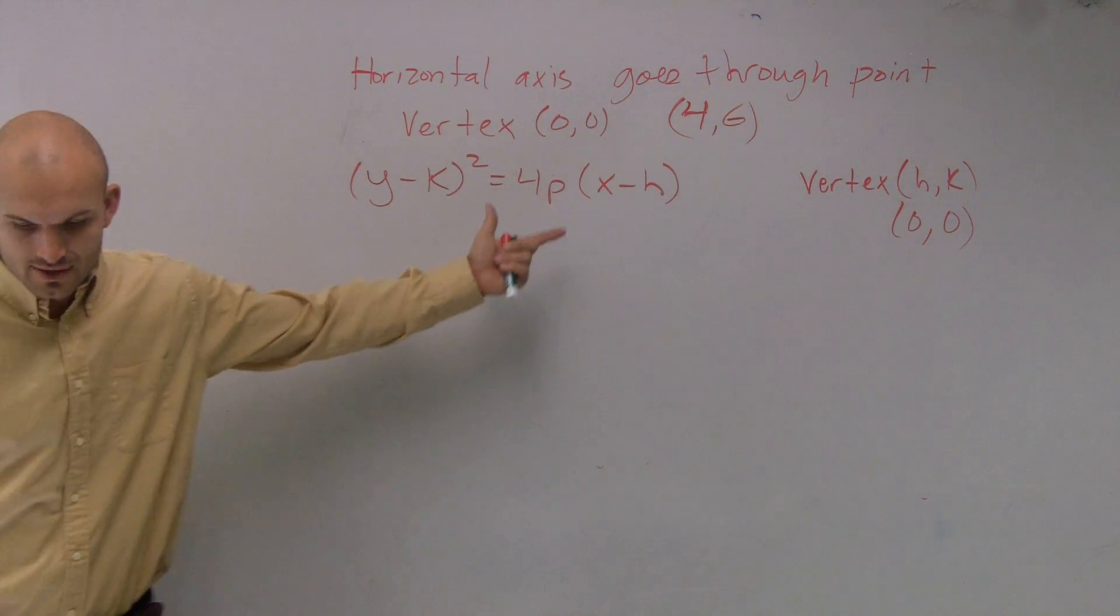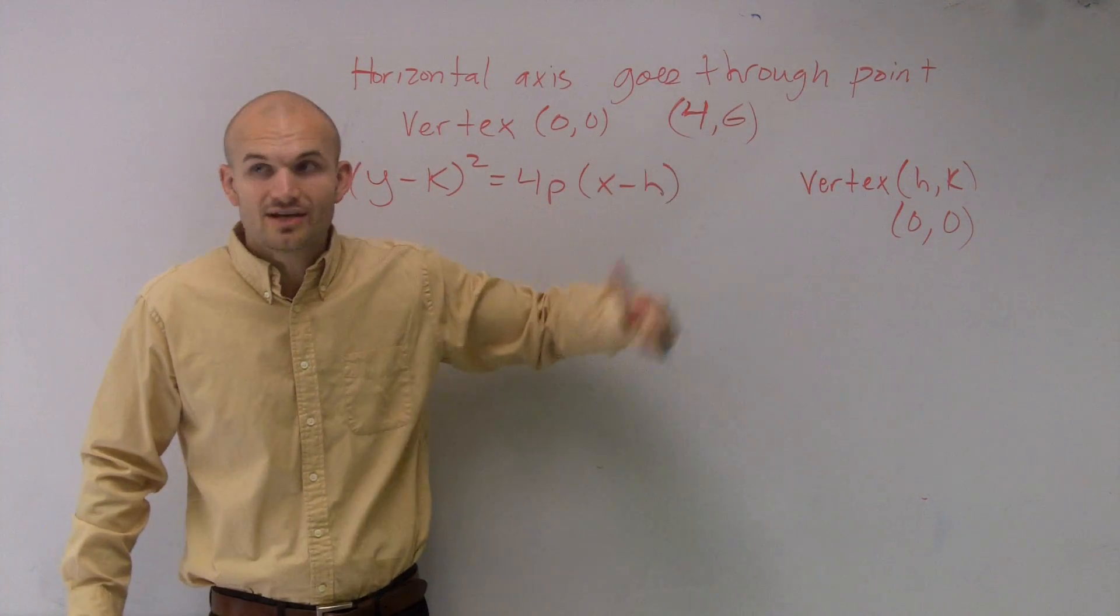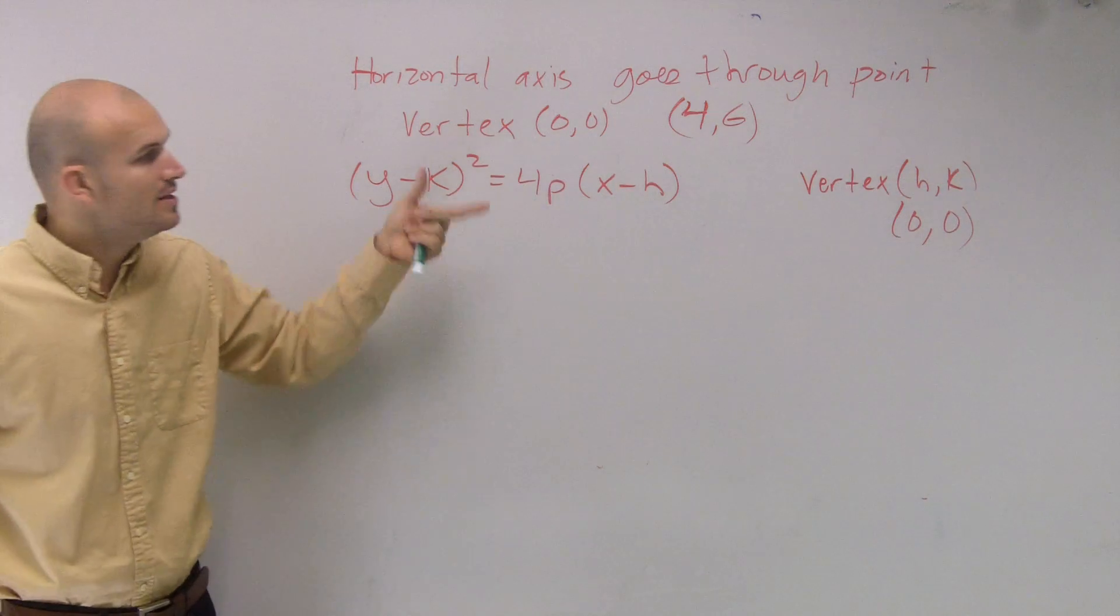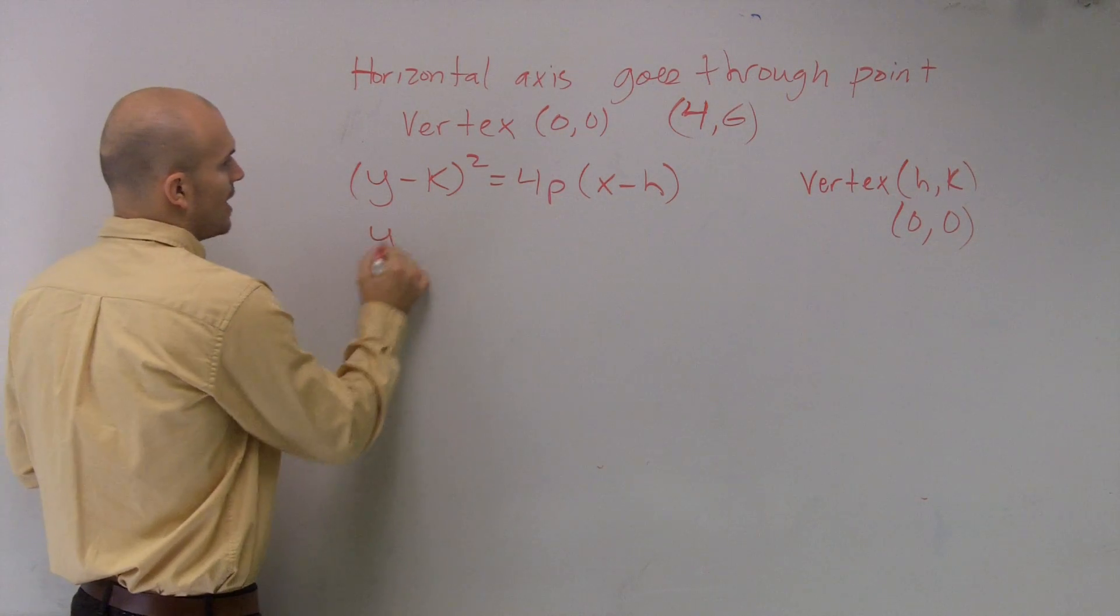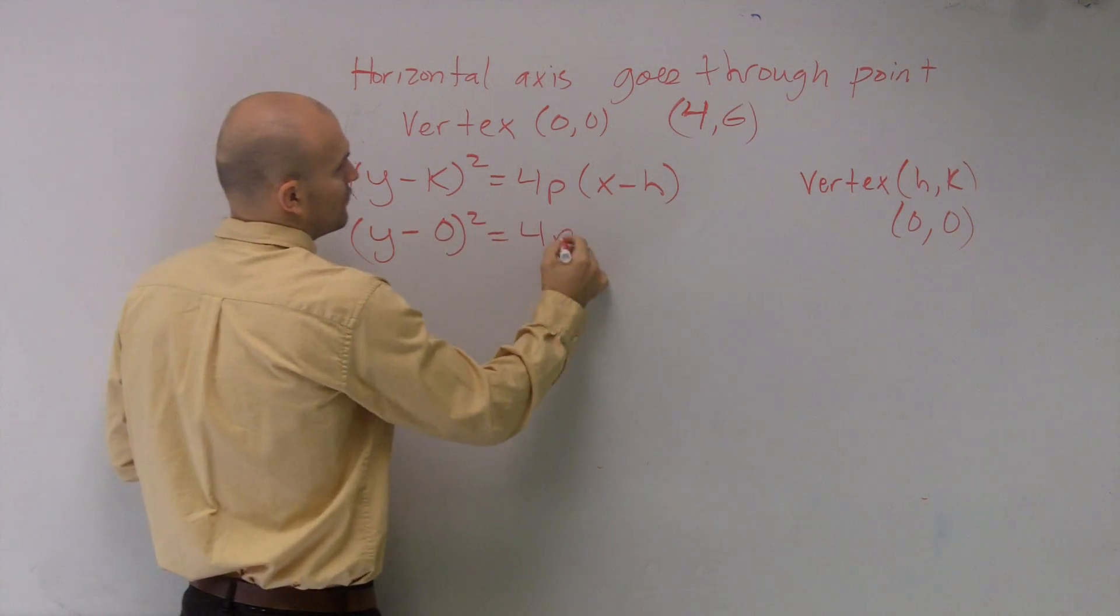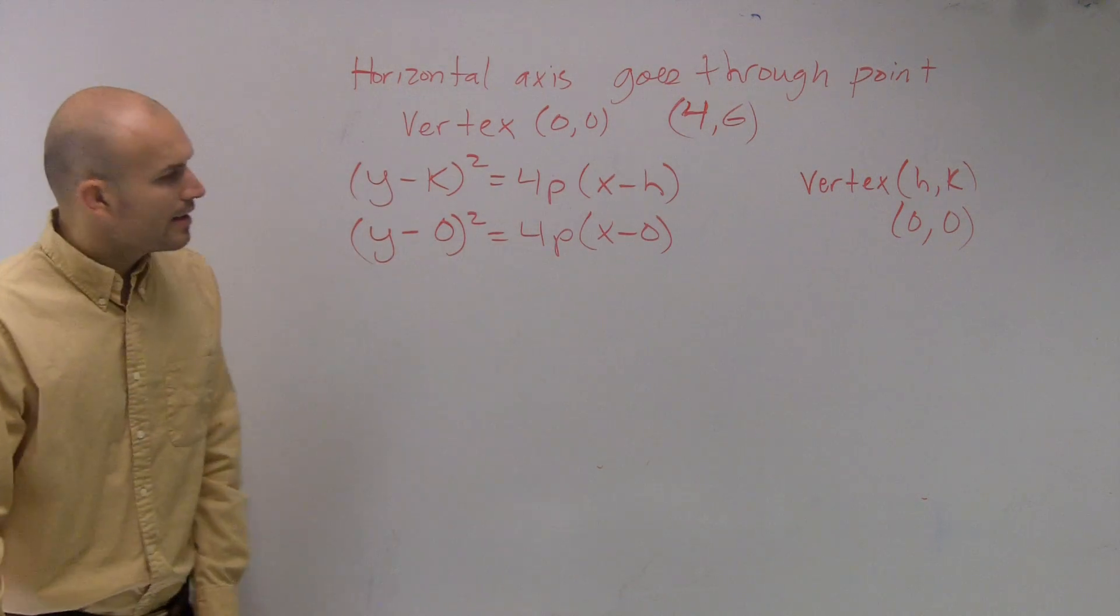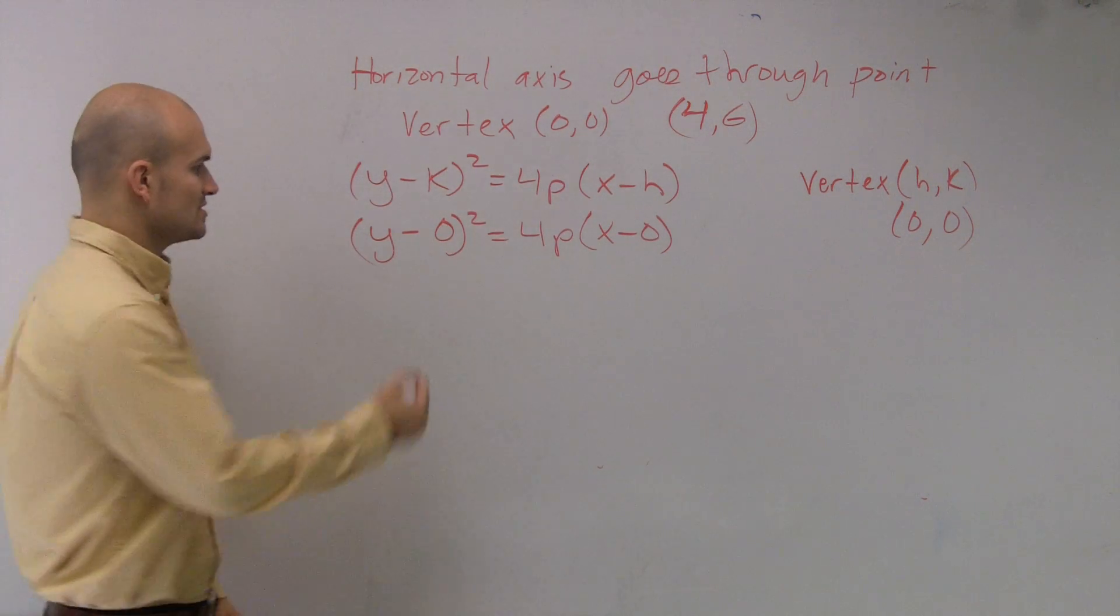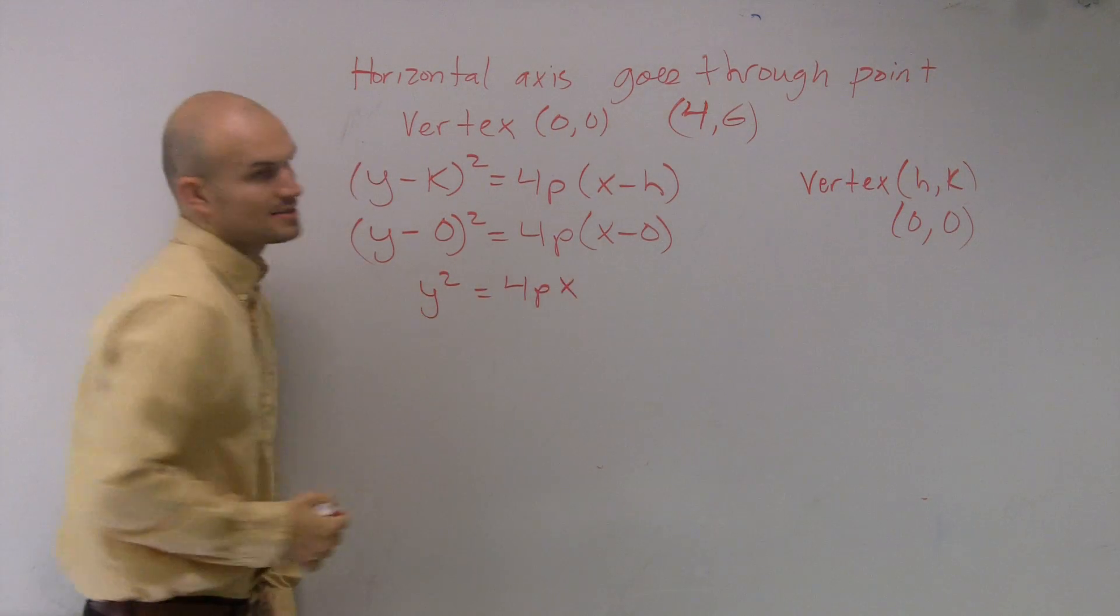Just here's our formula, right? The next step I said, you know, we first determine if it's horizontal or vertical, then write it into standard form. We wrote the form. So now let's just plug in all the information we can. So I'll write in (y-0)² = 4p(x-0). Obviously that's going to reduce this now to y² = 4px.